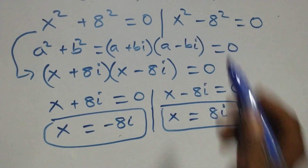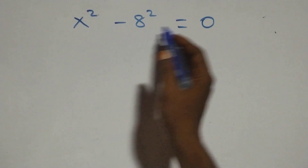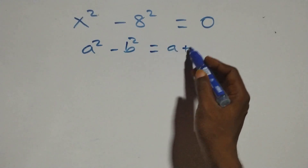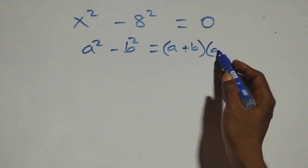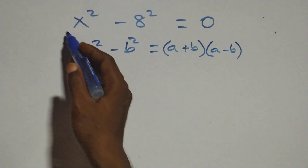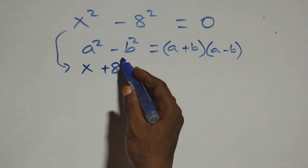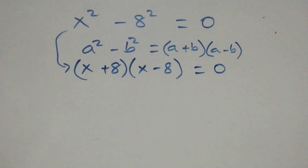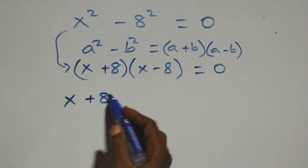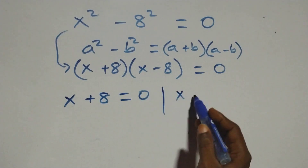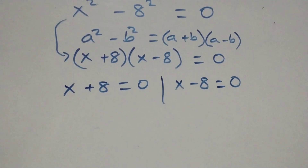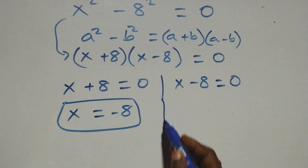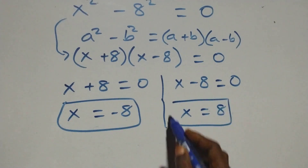Solving the second case, x² − 8² = 0, this also follows the difference of squares: (x + 8)(x − 8) = 0. We have two possible cases: x + 8 = 0 or x − 8 = 0, giving x = −8, which is a real solution, and x = 8, also a real solution.